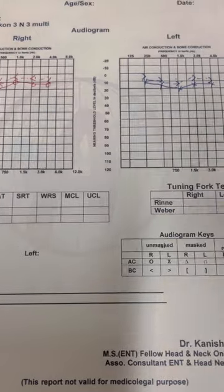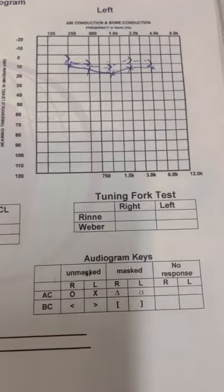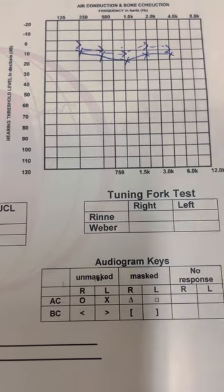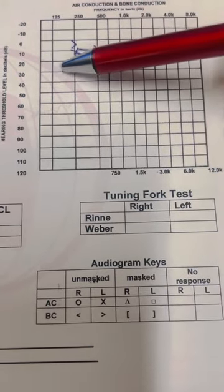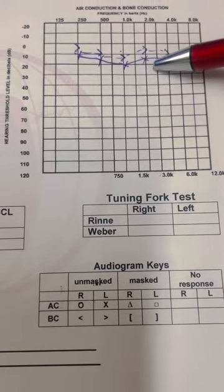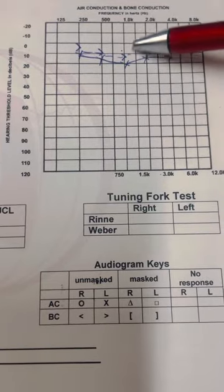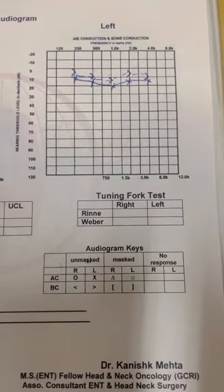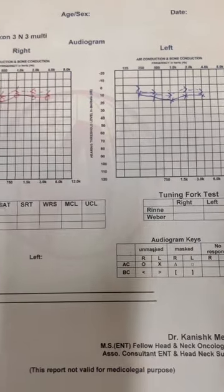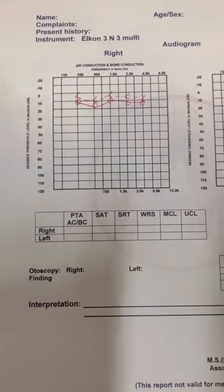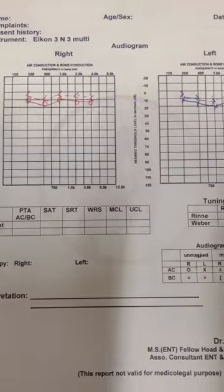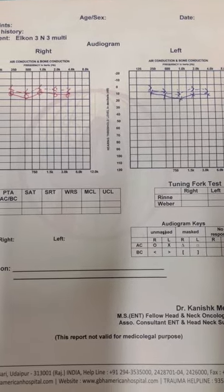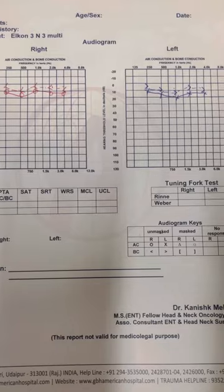This is the common nomenclature for an unmasked audiogram done on an OPD basis. As per WHO guidelines, above 25 decibels is considered normal hearing. So any graph where the lines are above 25 decibels is considered normal hearing. This audiogram is showing a normal audiogram of a healthy individual — this person is able to hear properly.